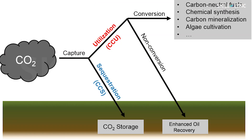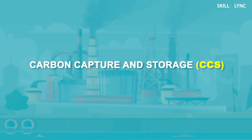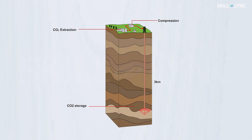Therefore, the waste produced by such power plants is treated such that the pollution is minimal. One way to ensure the carbon dioxide does not harm the environment is carbon capture and storage. After the combustion of the fuel, the carbon dioxide is separated from other gases and is stored underground after being compressed.